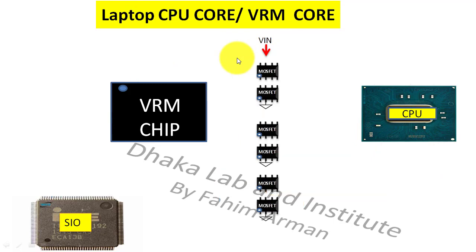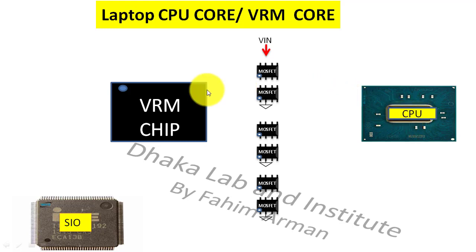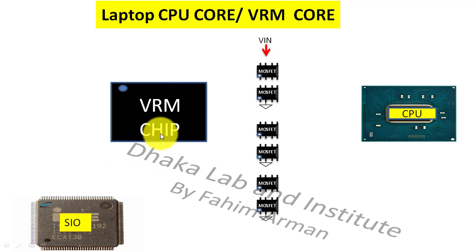First I will introduce this section with you. There is a CPU or processor, then there is a VRM chip, and this is the SIO or IO chip. I will show you how these parts perform.